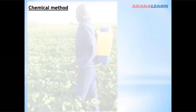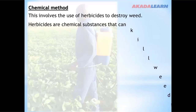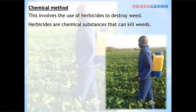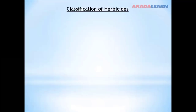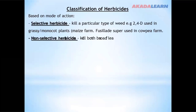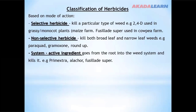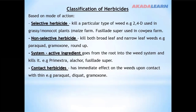Chemical method involves the use of herbicides to destroy weeds. Herbicides are chemical substances that can kill weeds. You can see a man here using a knapsack sprayer. Classification of herbicides based on mode of action: selective herbicides kill a particular type of weed and are specific in destroying weeds. Non-selective herbicides kill both broadleaf and narrow-leaf weeds — they kill everything. Systemic herbicides have an active ingredient that goes from the roots into the weed system and kills it. Contact herbicides have an immediate effect on weeds upon contact.